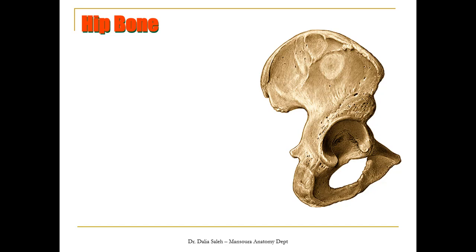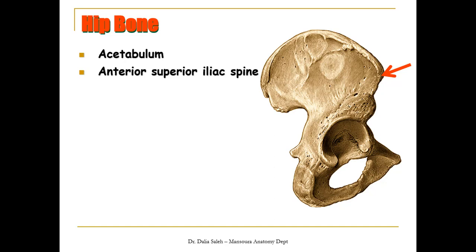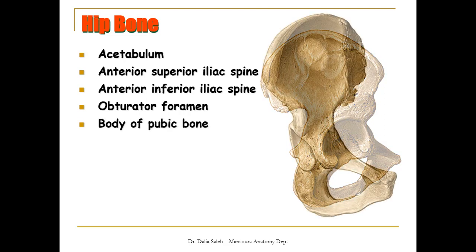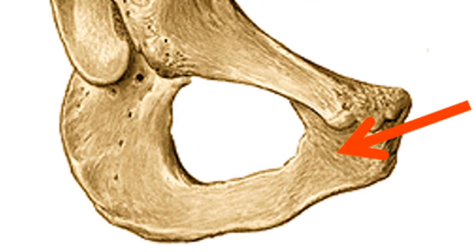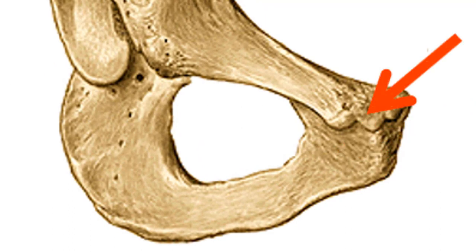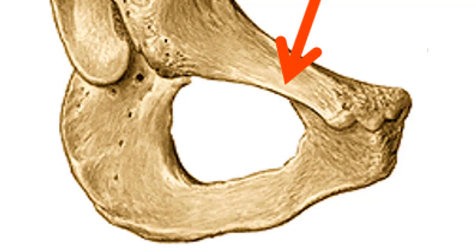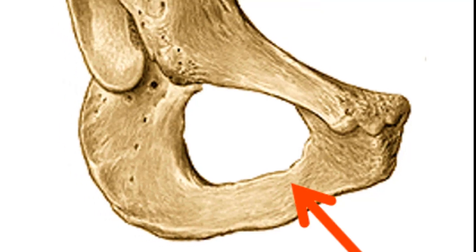Let's revise some bony features before studying the front of the thigh. We can see the acetabulum, where the head of the femur articulates to form the hip joint. Along the anterior border of the hip bone we have the anterior superior iliac spine and the anterior inferior iliac spine. Below the acetabulum lies the obturator foramen. This is the pubic bone with its body, its upper border called the pubic crest, which ends laterally at the pubic tubercle, and the triangular area called the pectineal surface, also known as the superior surface of the pubic ramus. And this is the anterior pubic ramus.